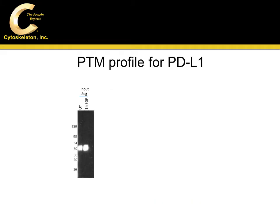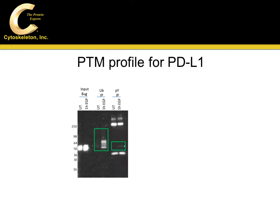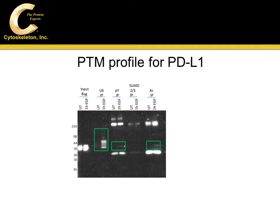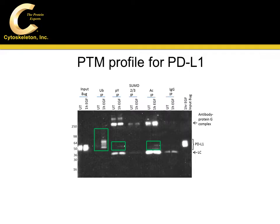Western immunoblot was performed using a PD-L1-specific antibody, which allowed us to rapidly obtain the ubiquitination, tyrosine phosphorylation, SUMOylation 2/3, and acetylation profile of PD-L1 in a single day.